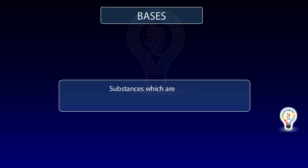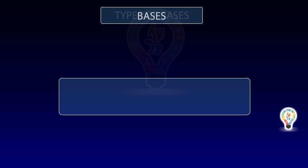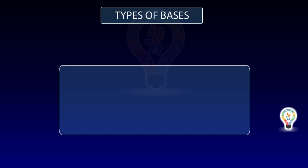Concentrated acid: acids containing more acid and less water. Dilute acid: acids containing less acid and more water.